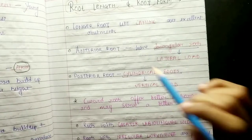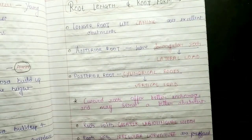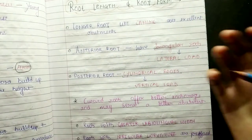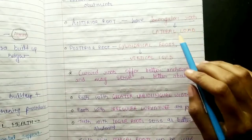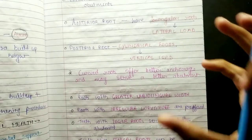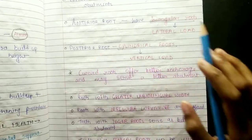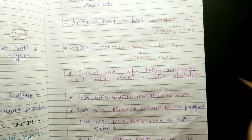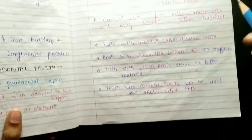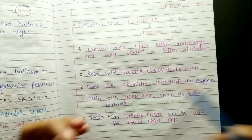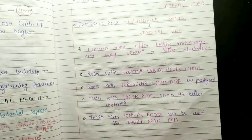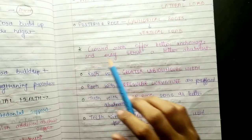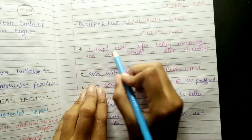Regarding root form, longer roots are preferred. For example, the canine root would be an excellent abutment. Anterior roots are triangular and can bear load well. Posterior roots can also be used as they will bear load. Curved roots serve as better abutments.